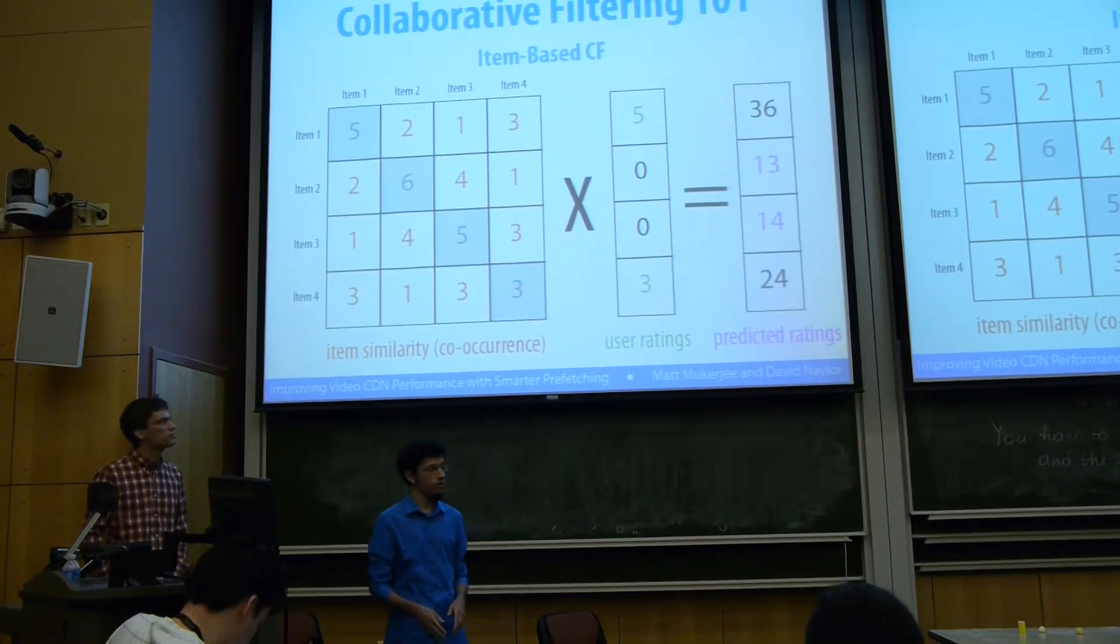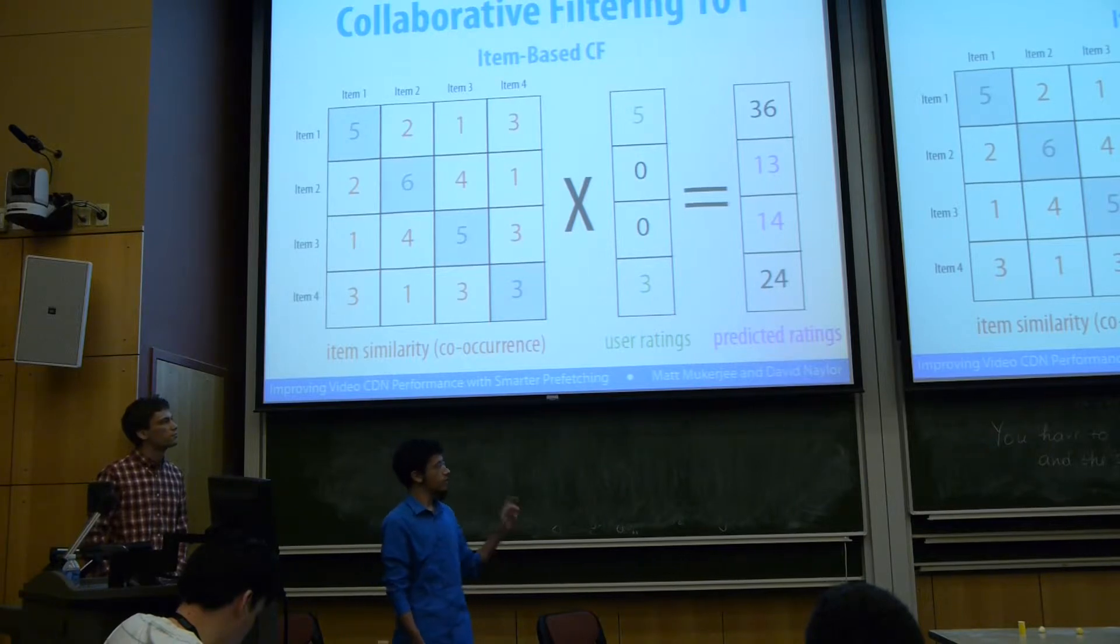Let's say in our dataset we have only two users that both watched video one and video two. Well then in this matrix, at one comma two, we'll put a two, because we're using co-occurrence as a metric.